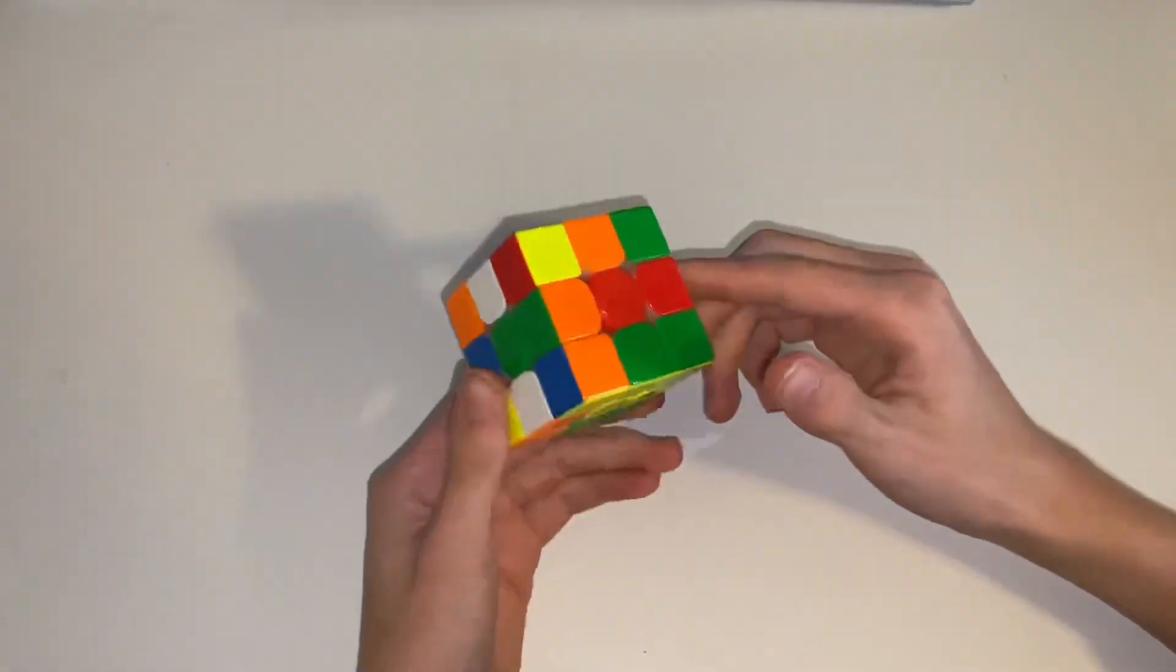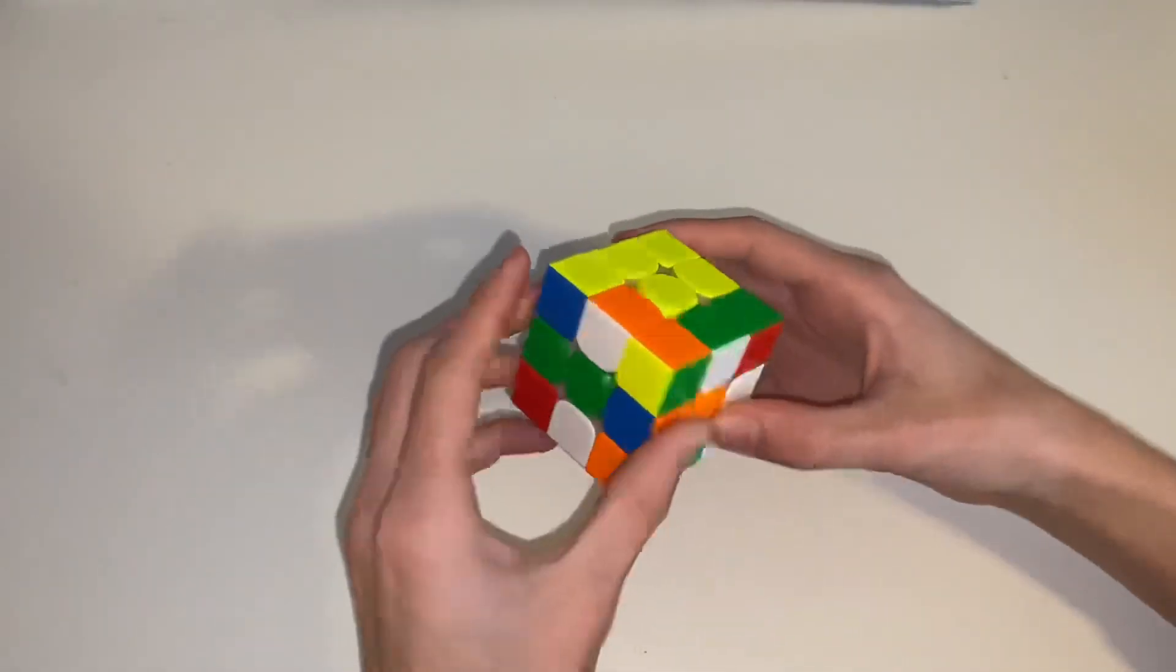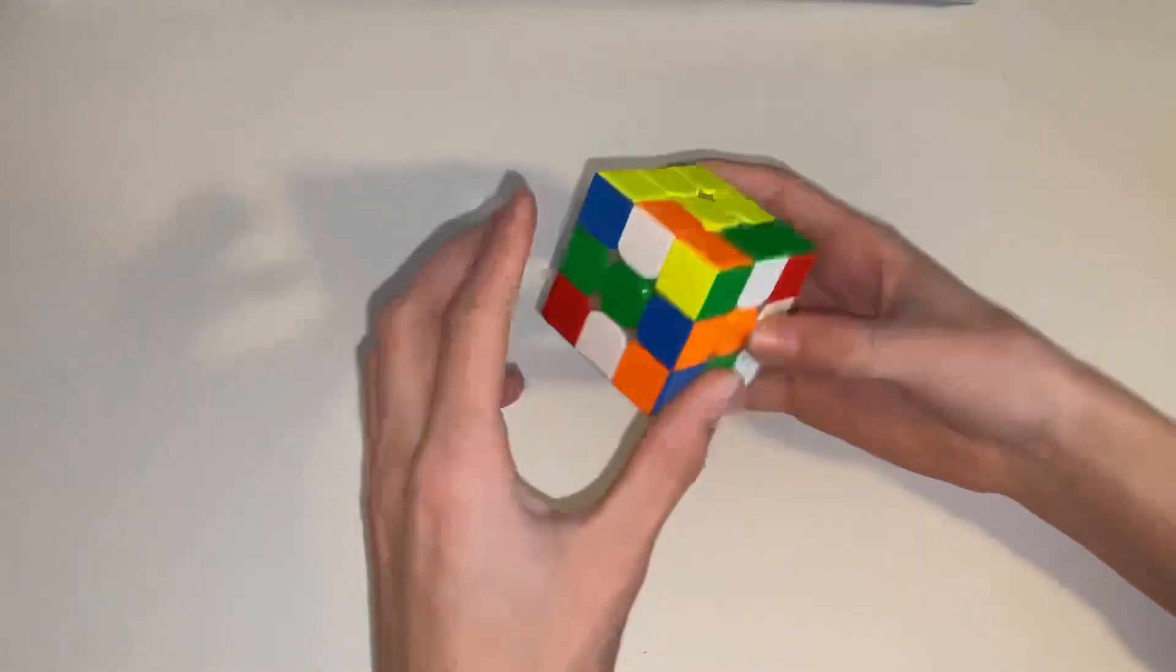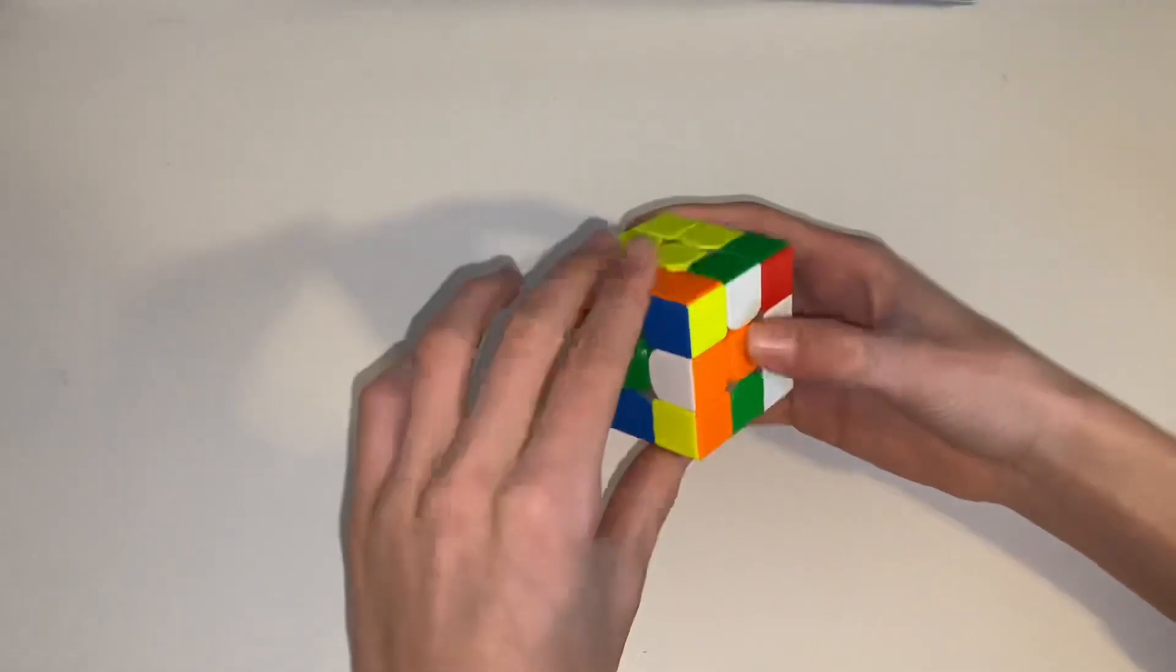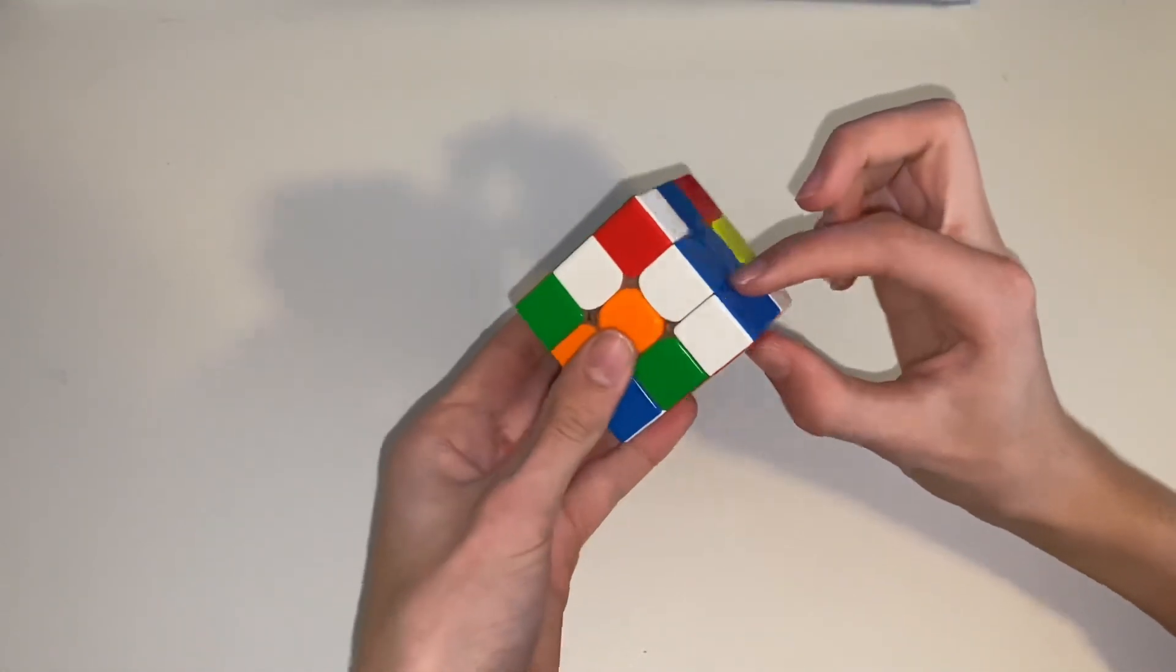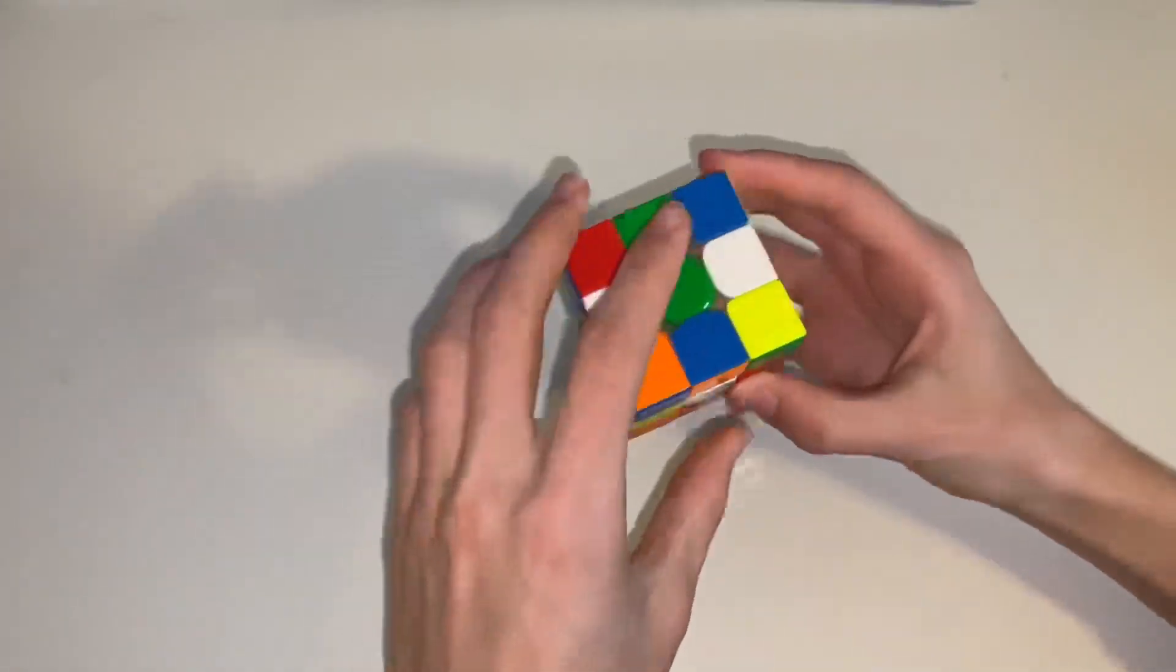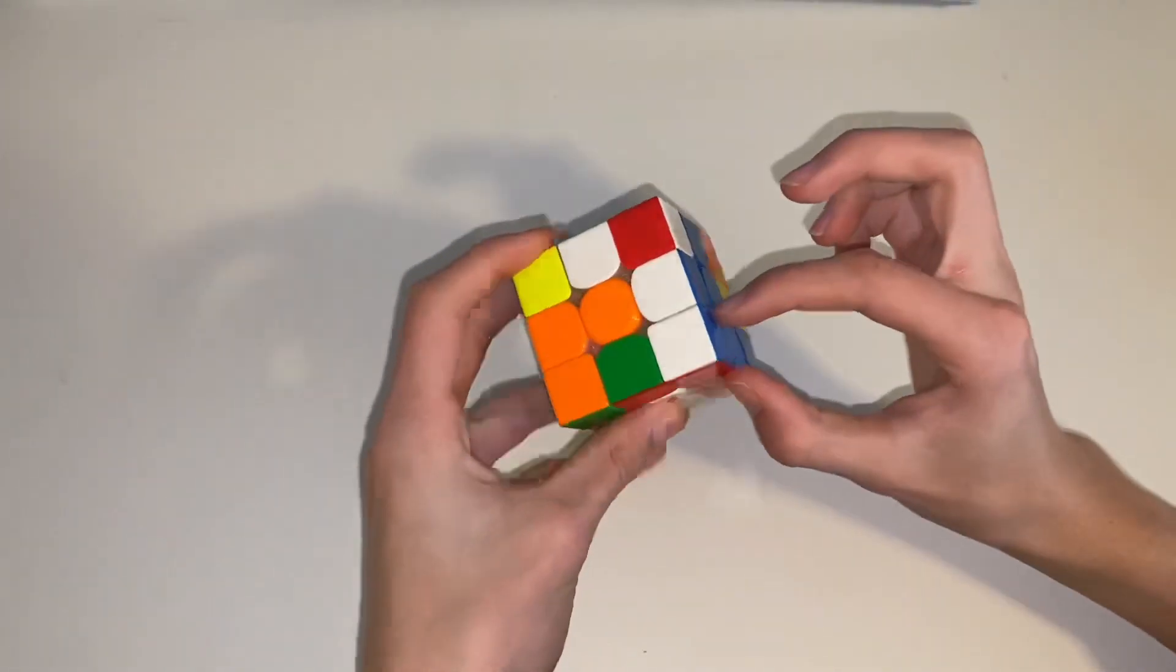So this is the scramble, you can follow along on screen or look in the description. I first notice this orange piece and these red can be put in relative to each other. I also notice this block. So I put these in relative to each other, and if I put in the red piece first, we can insert this block.